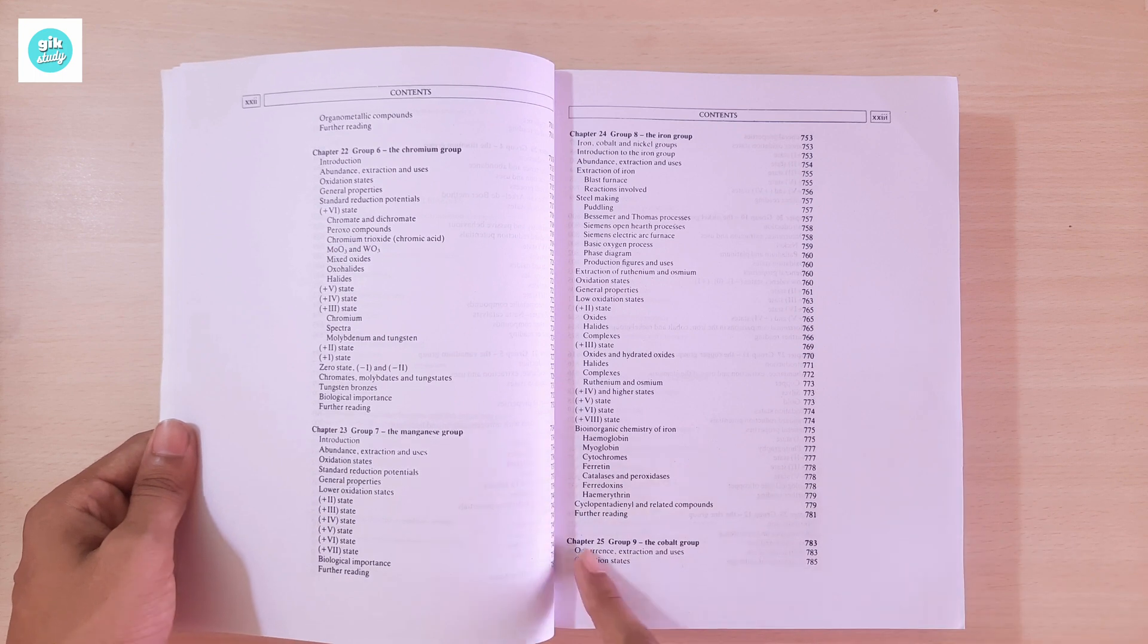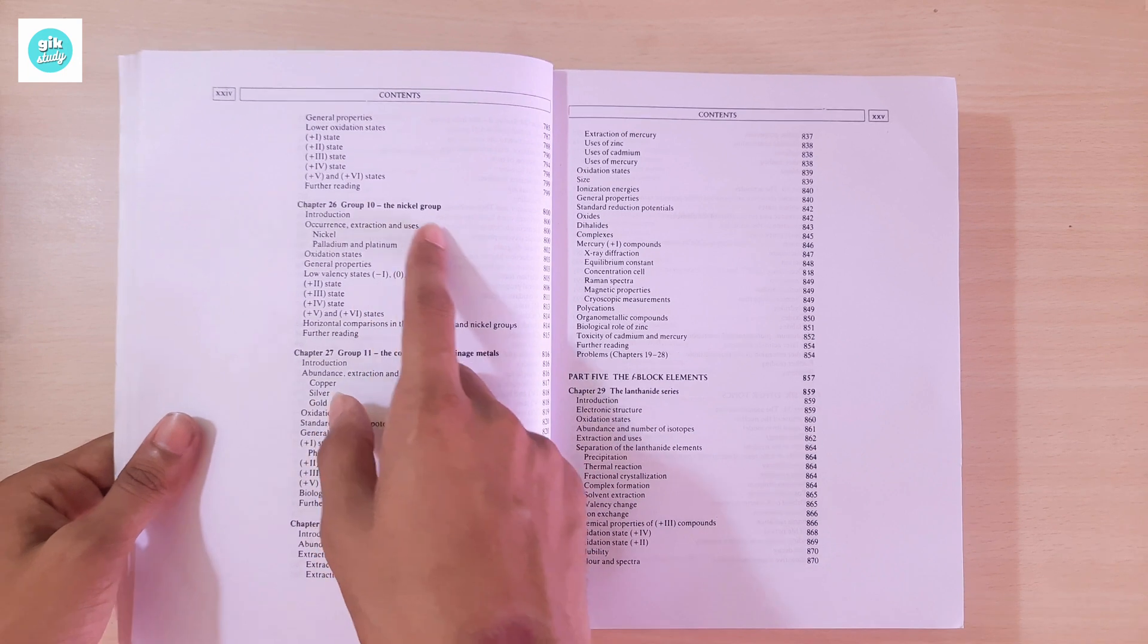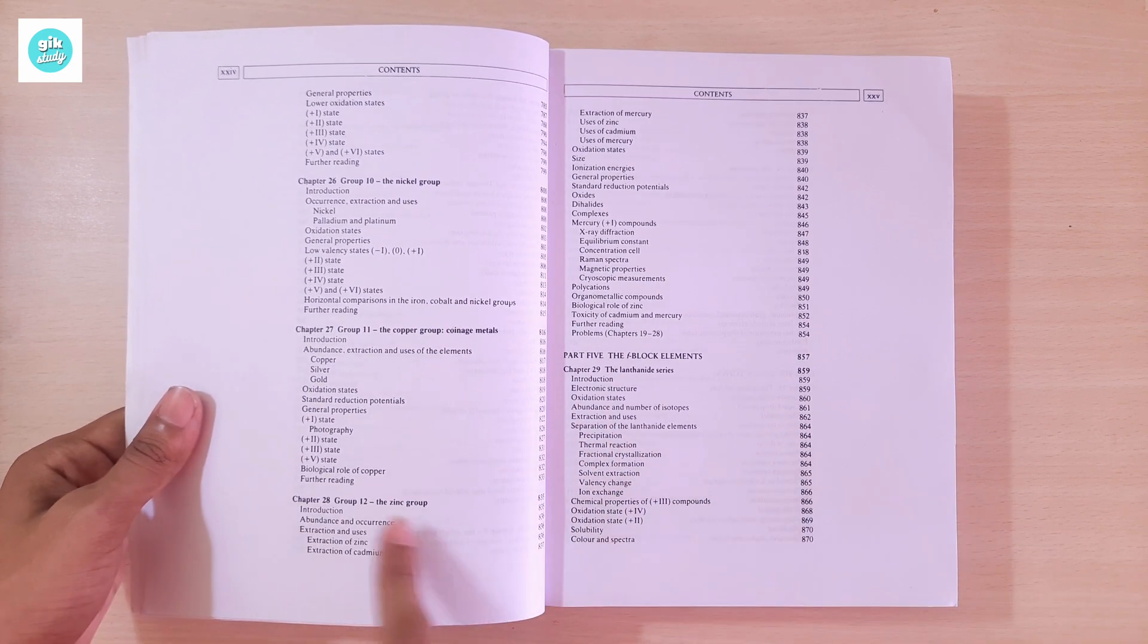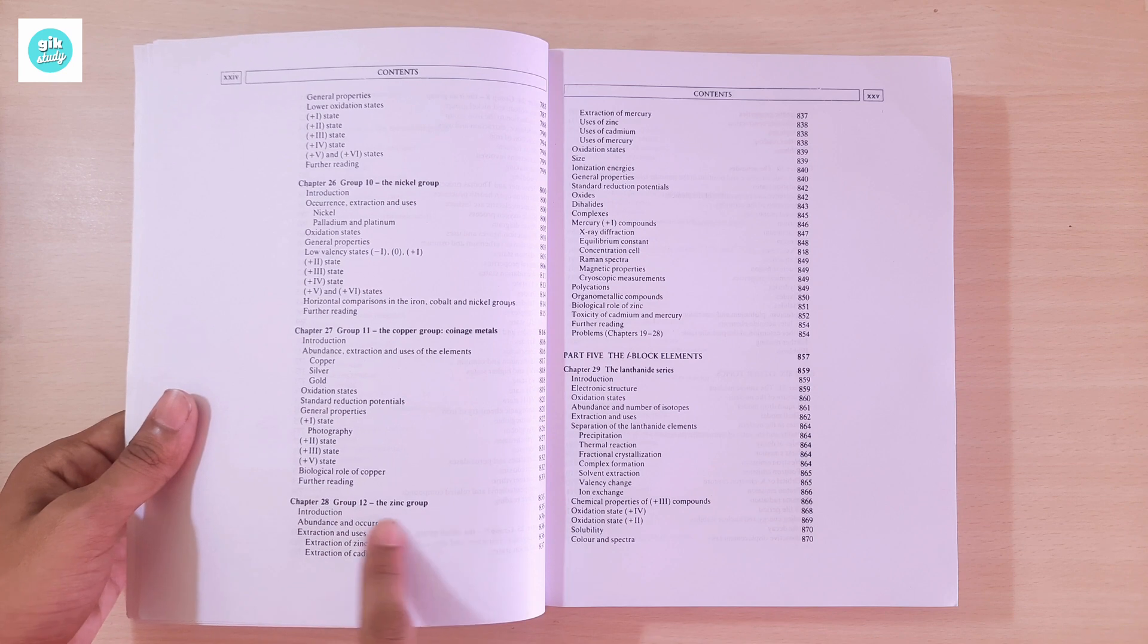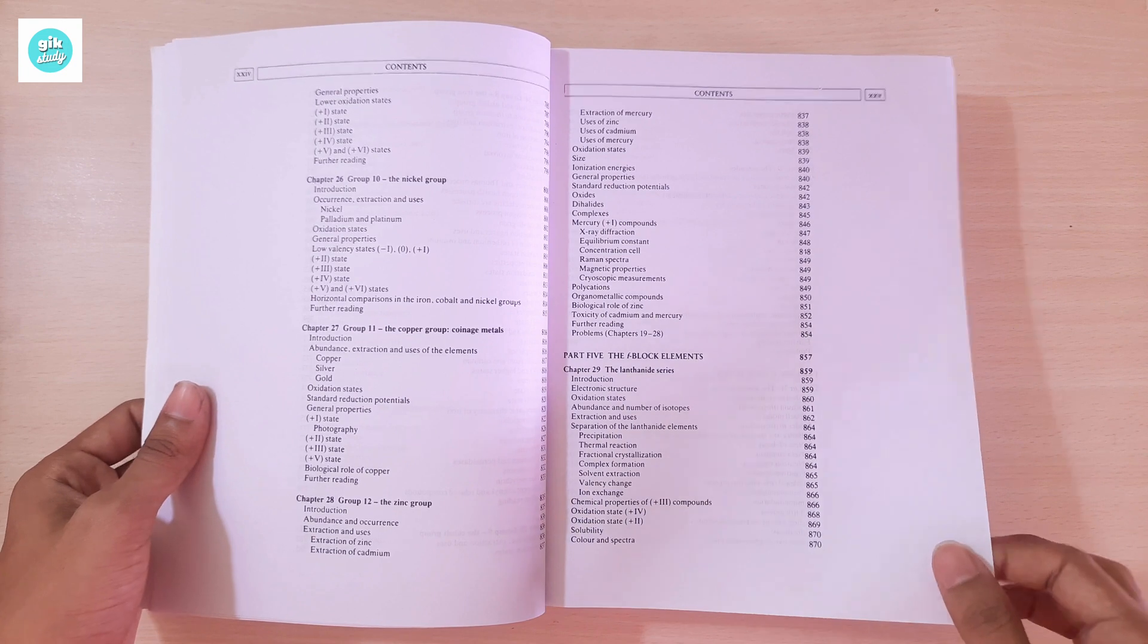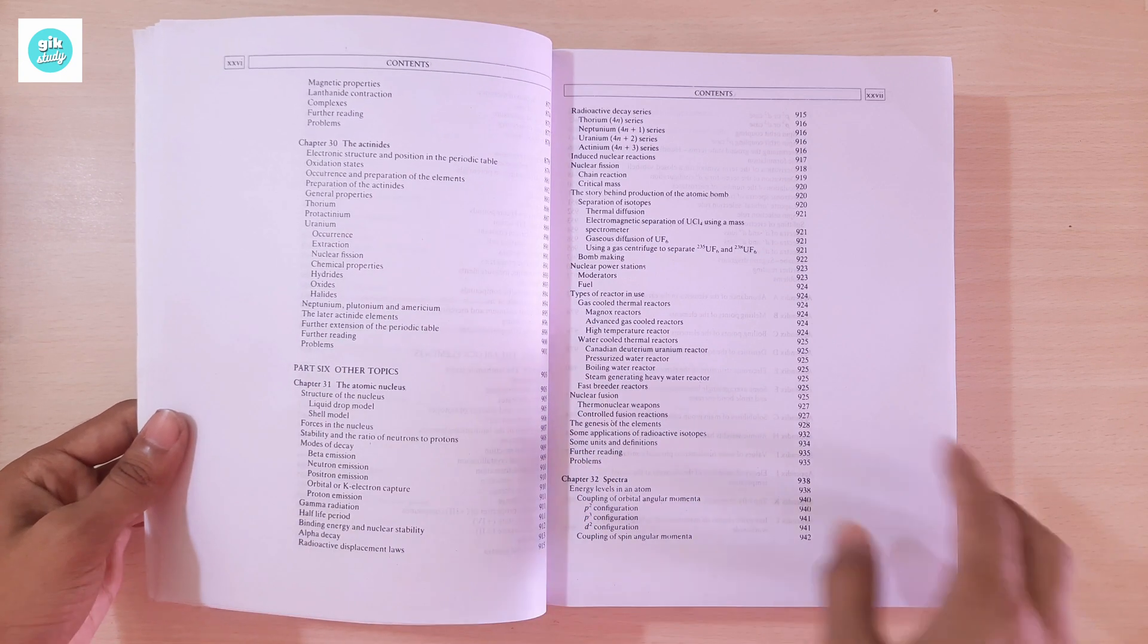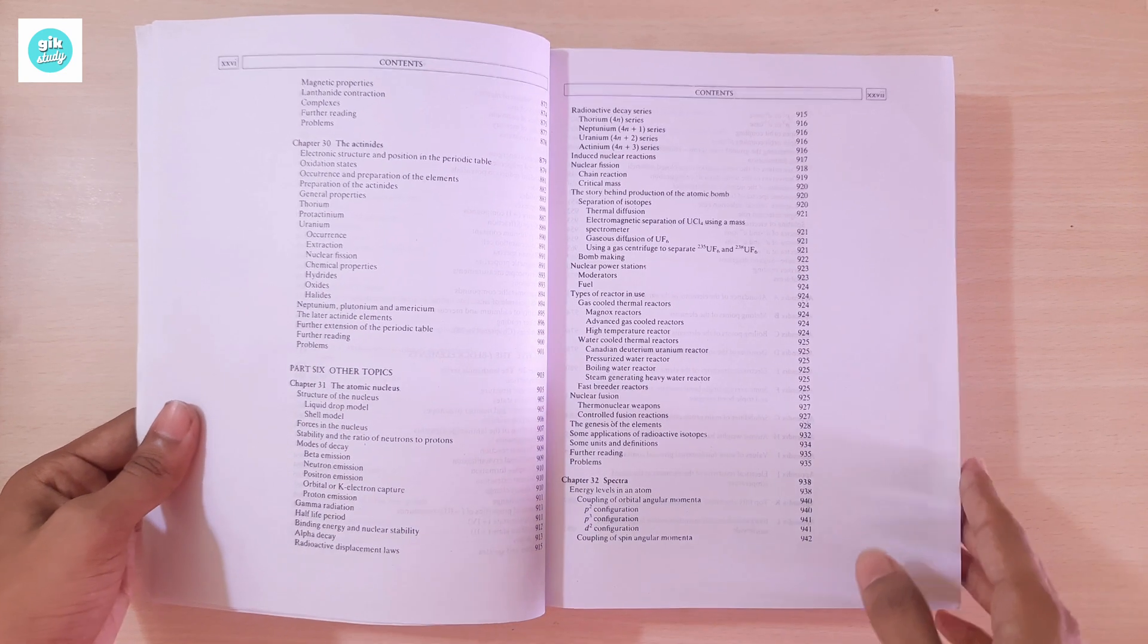Chapter 25: Group 9, the Cobalt Group. Chapter 26: Group 10, the Nickel Group. Chapter 27: Group 11, the Copper Group, also known as the Coinage Metals. Chapter 28: Group 12, the Zinc Group. Part Five: The F-Block Elements. Chapter 29: The Lanthanide Series. Chapter 30: The Actinides.